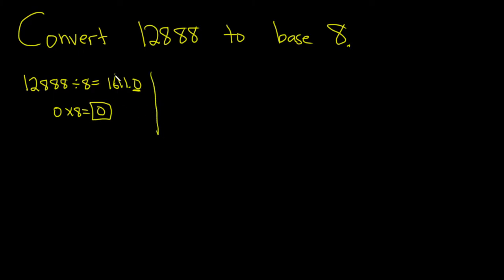Then you repeat the process. You take this one again, take this one here, this is the whole number part, and then just divide it by 8 again. And again, we're looking for the remainder. So 1611 divided by 8.